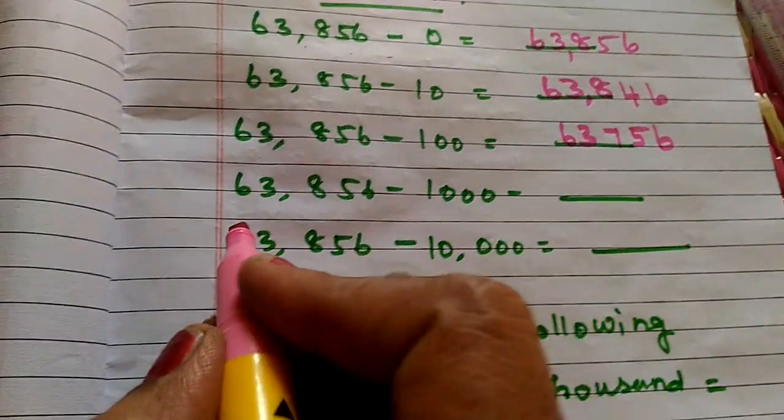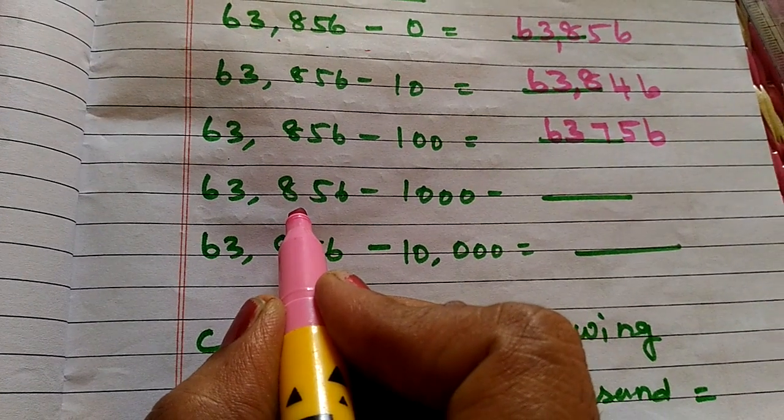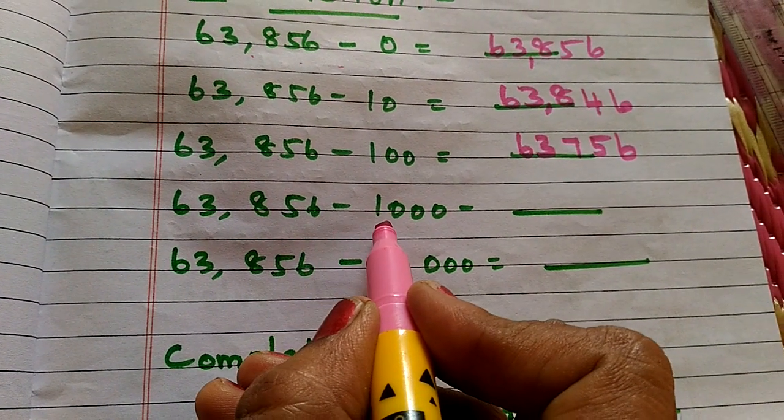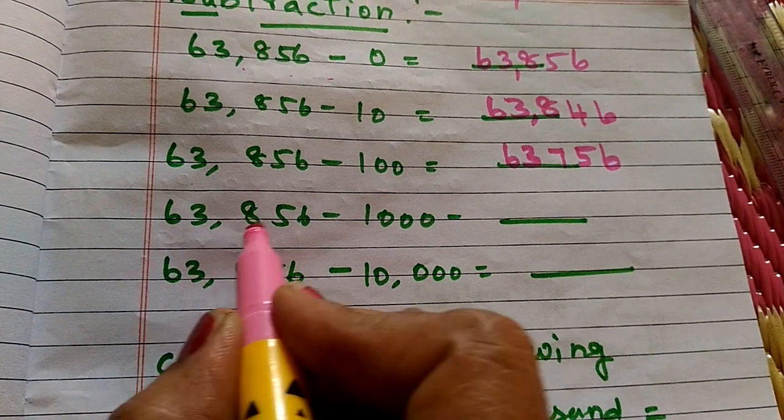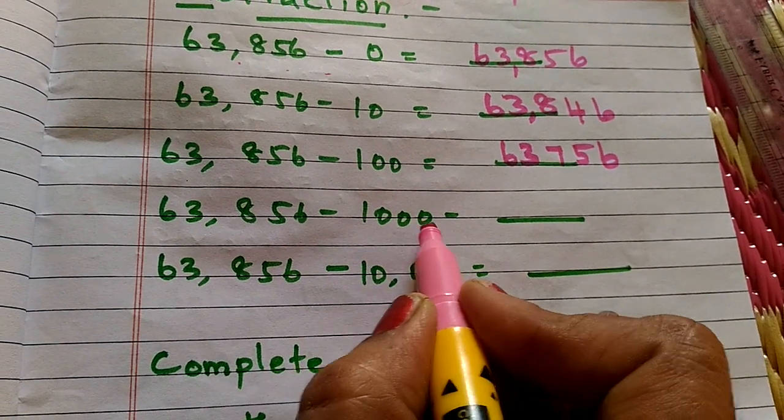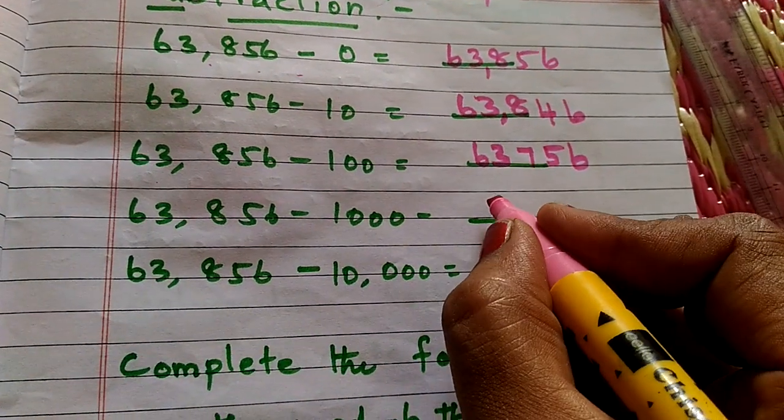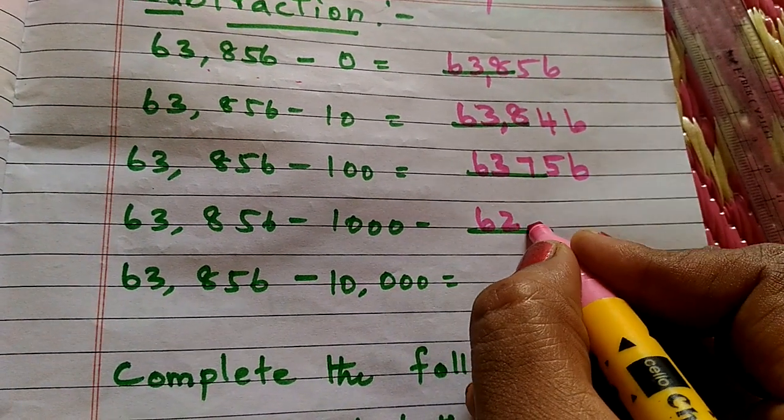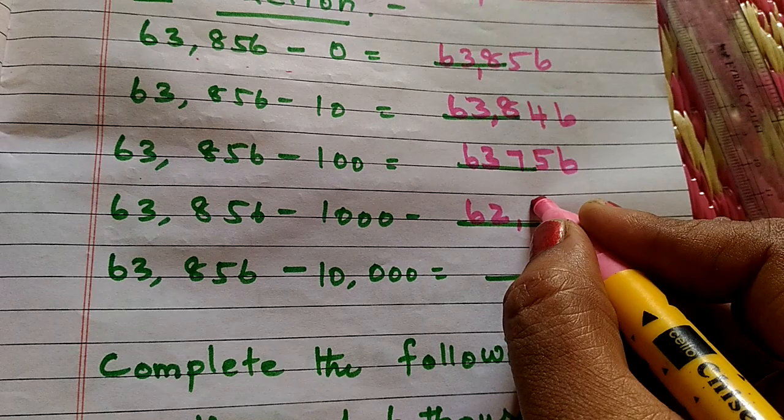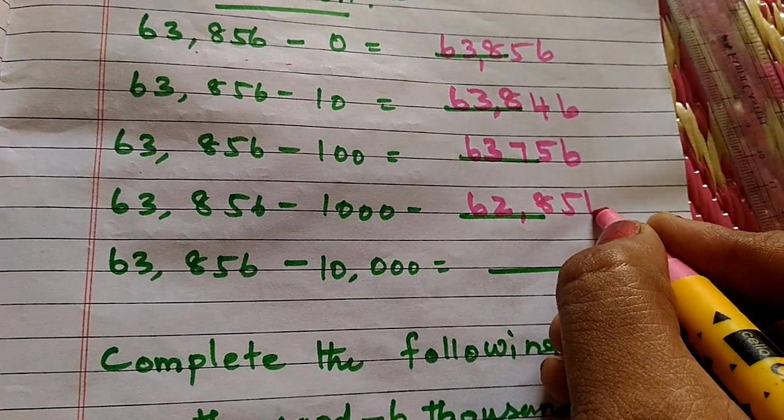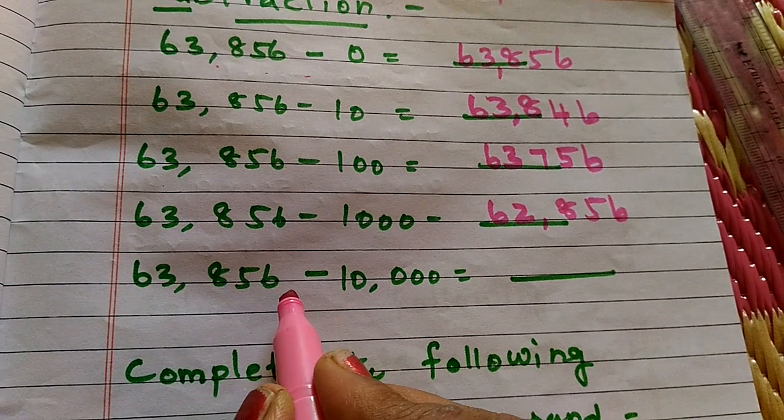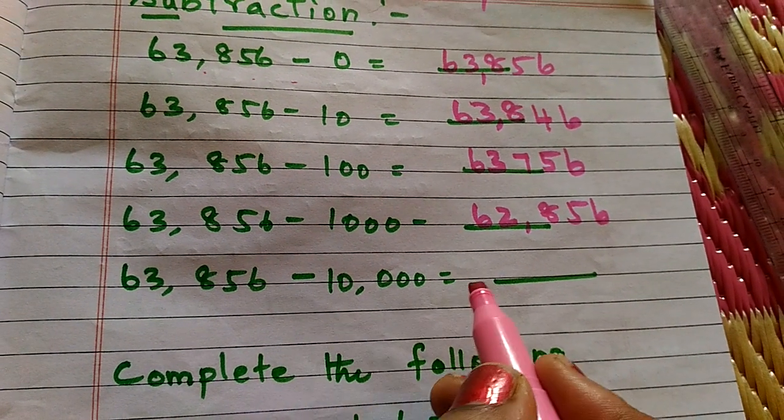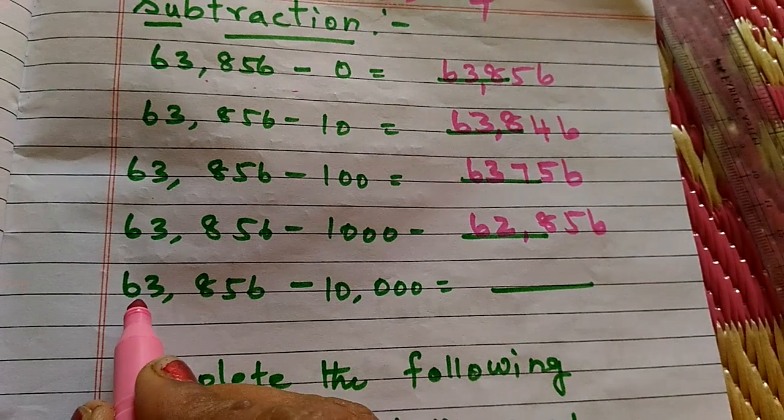Then 63,856 minus 1,000 equals 62,856. Then 63,856 minus 10,000 equals 53,856.